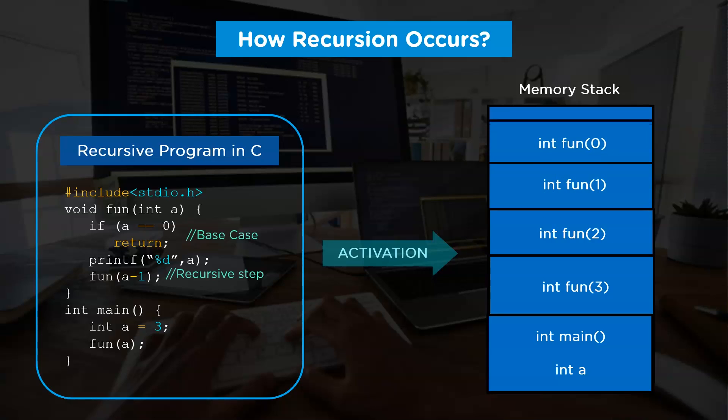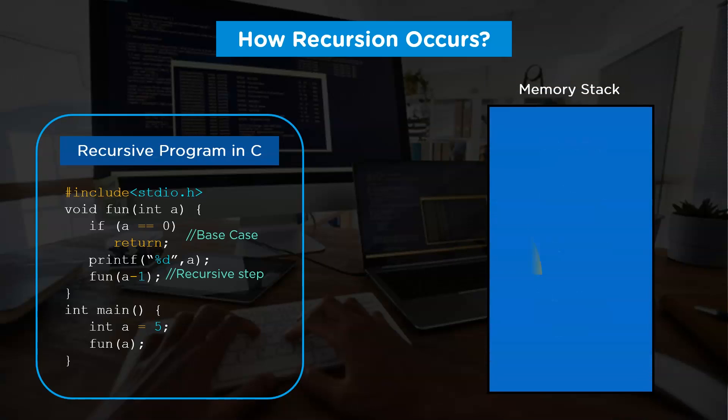This time, once the control enters an if block, it will execute a return statement and activation record zero will get popped out of the memory stack. Further, every function inside the memory stack will get popped out from it, which will result in generation of output. The output that will get printed on the console for this particular program is 321.